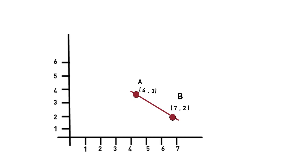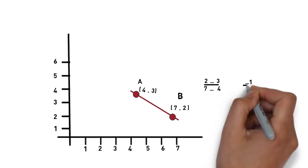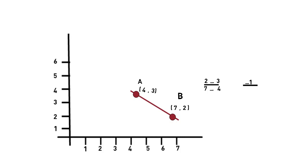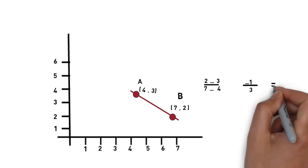If I put in the similar equation, that will be y2 minus y1 over x2 minus x1, we can use 2 minus 3 divided by 7 minus 4, which will be simplified to minus 1 over 3. That will be the gradient of this line.